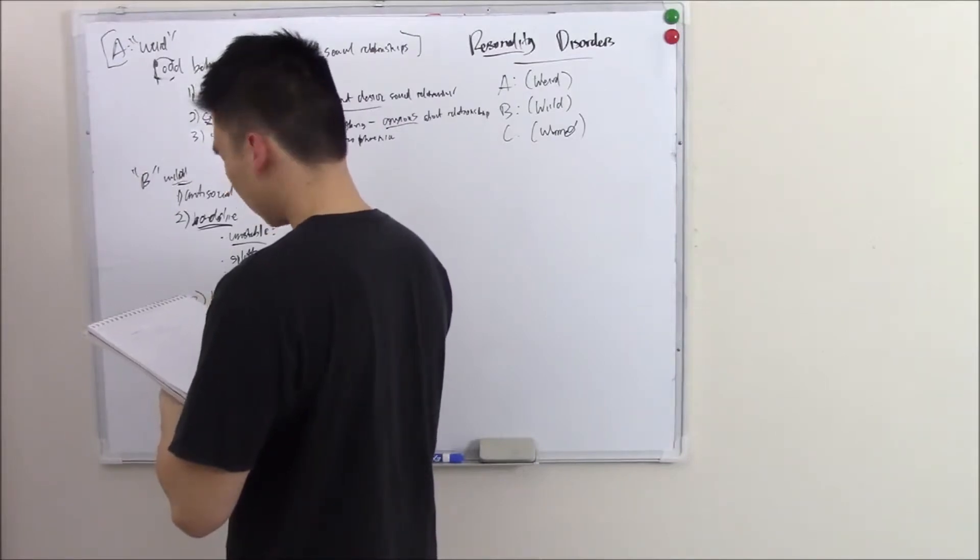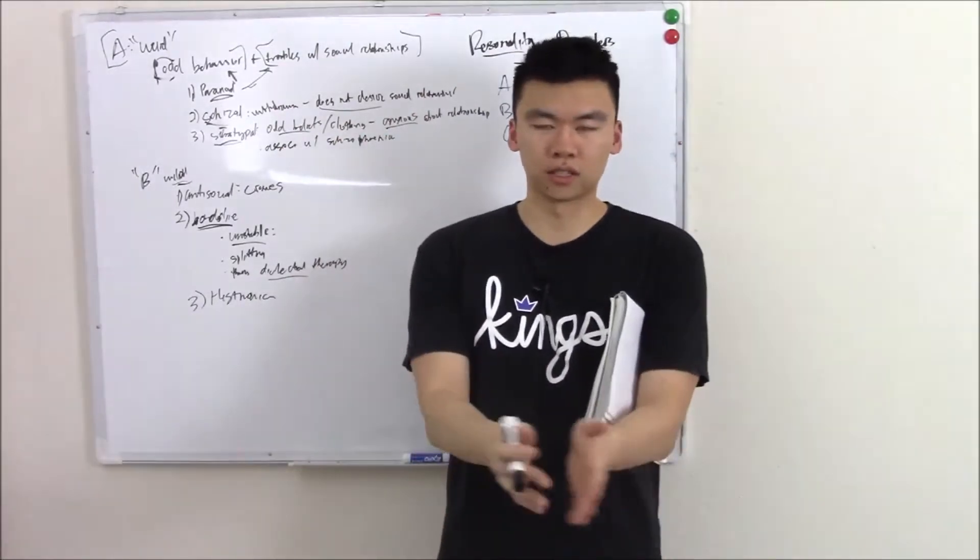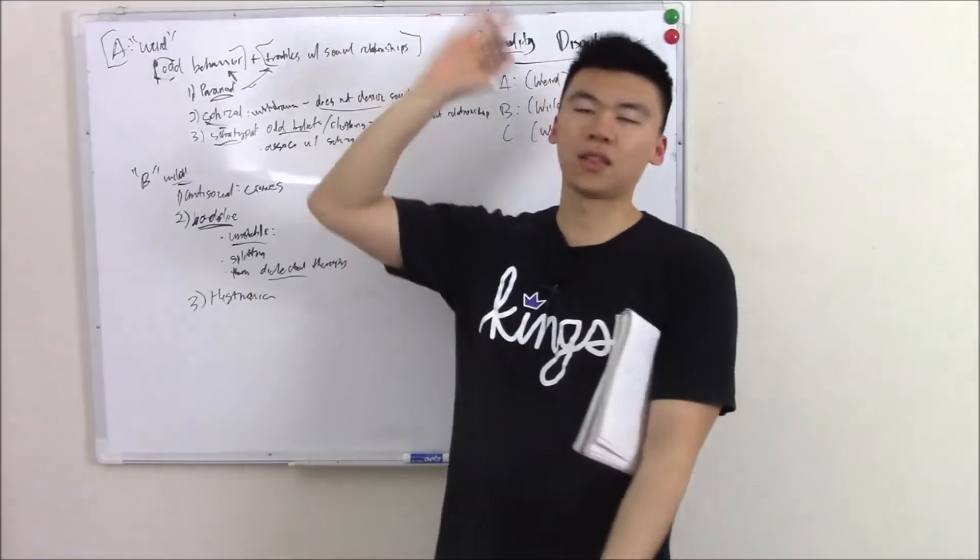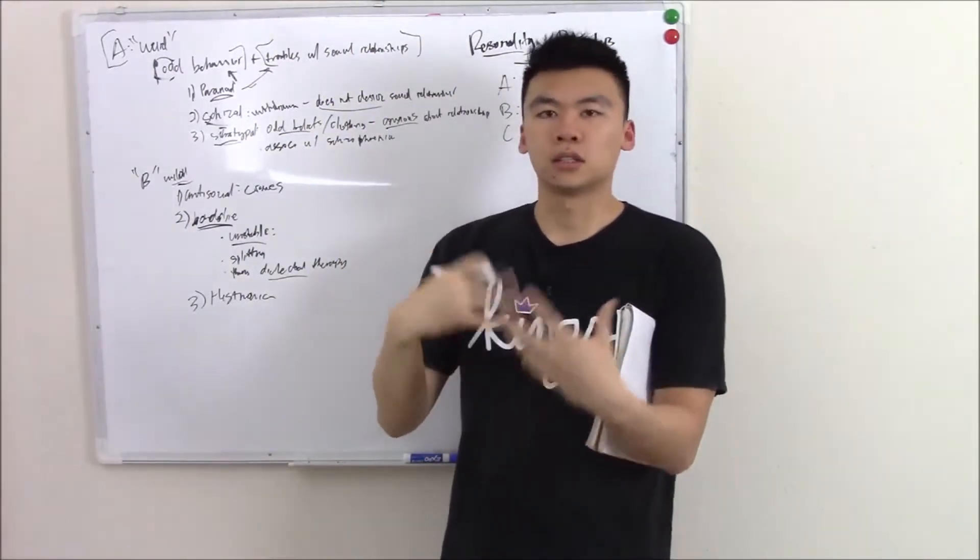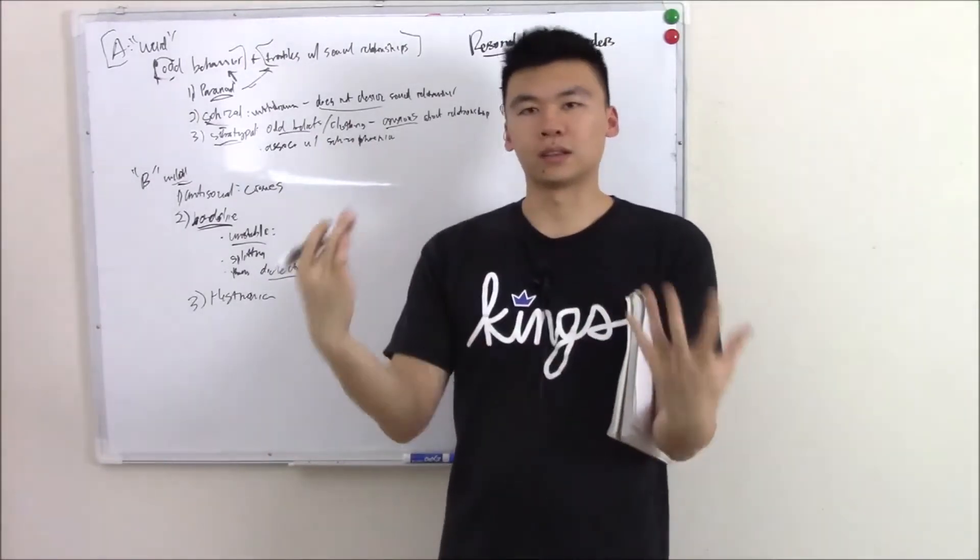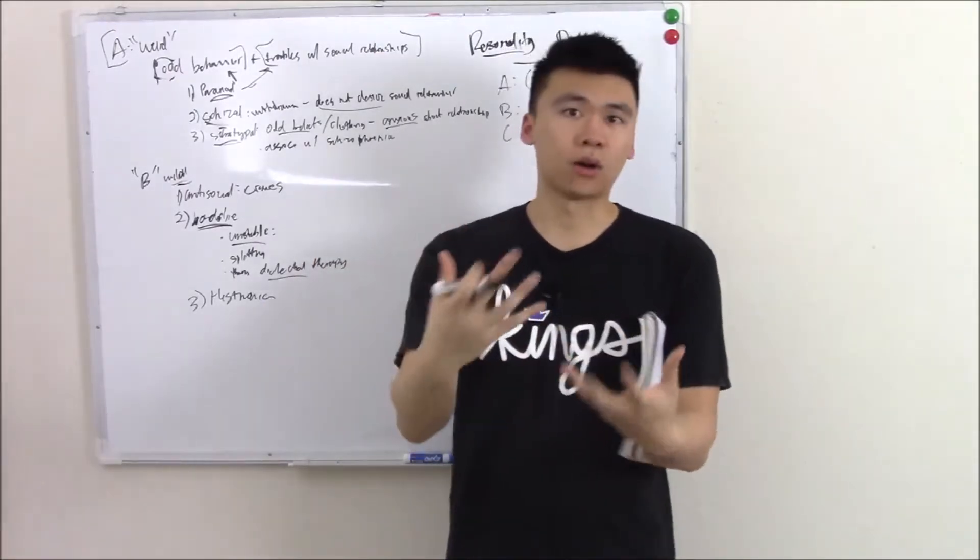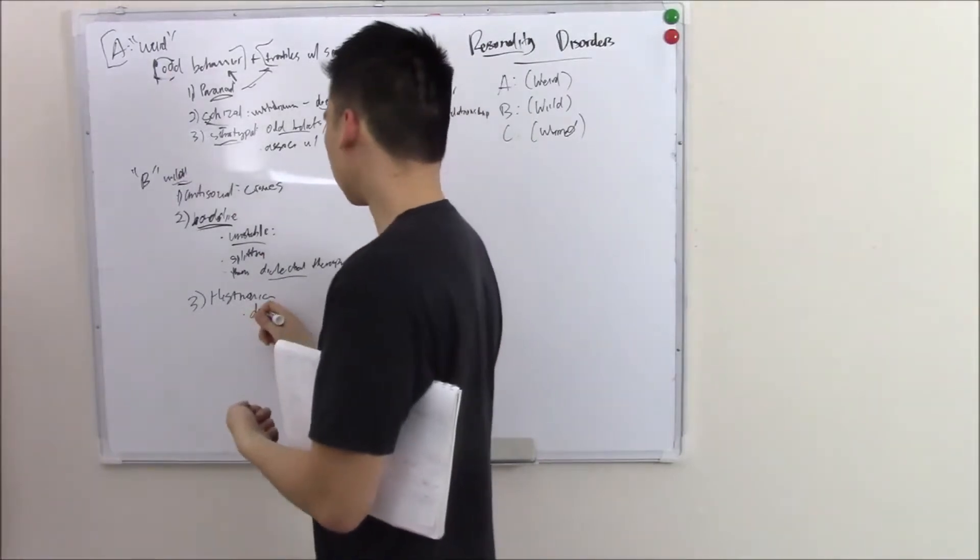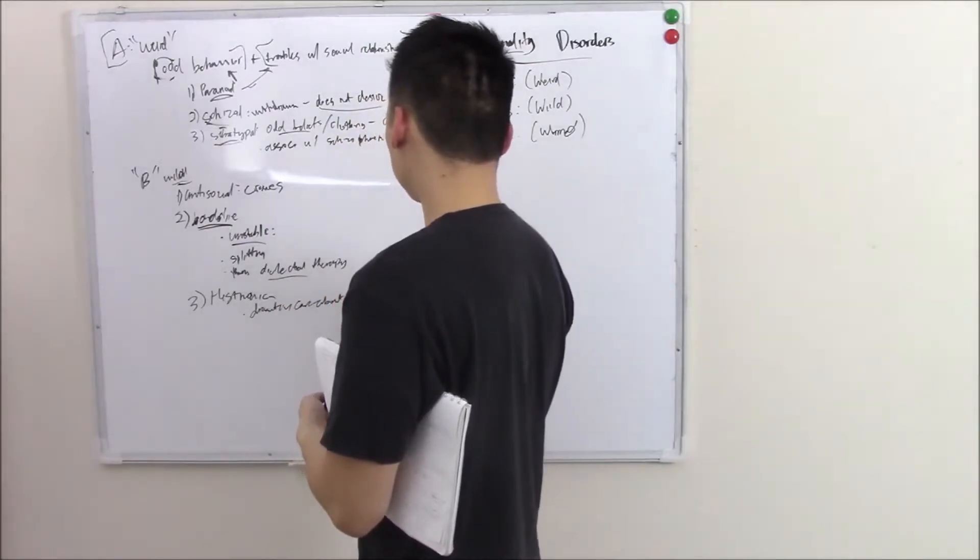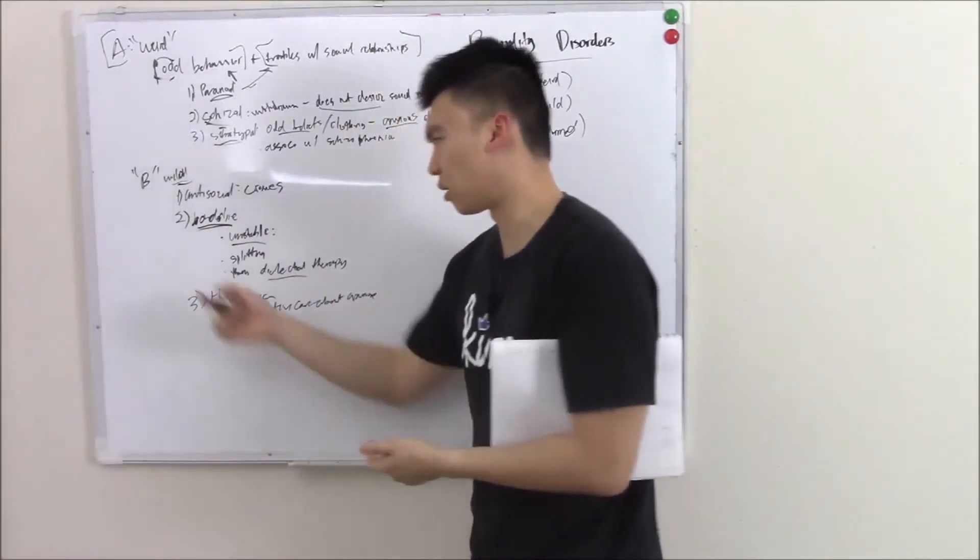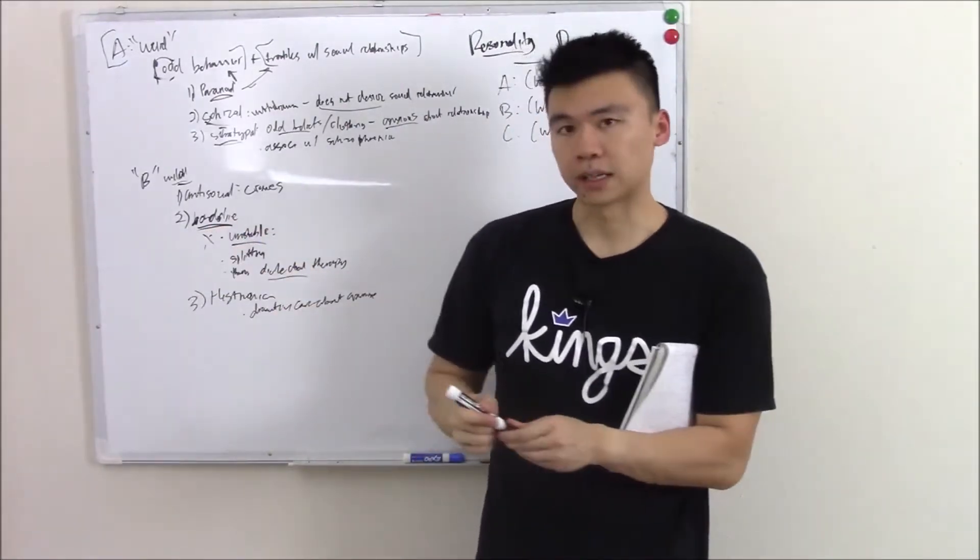Third up, histrionic. These are very dramatic people. People that exaggerate a lot. So if something's 12 inches, they might say it's 18 feet long. Or it's a thousand degrees outside. They're very dramatic. They need to be the center of attention. So they might dress very brightly or make loud noises. They need people's eyes on them. They're very conscious of their self image and how other people feel about them. So I'll just write dramatic, care about opinions. No tendency for things like self-harm or any suicide ideation. So it's not anything like borderline. They're just very dramatic, need to be the center of attention.